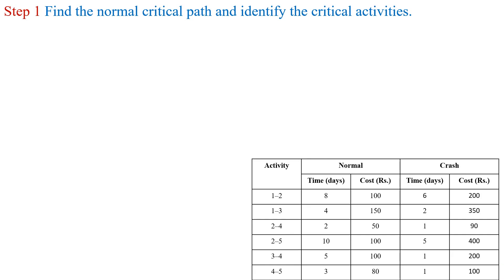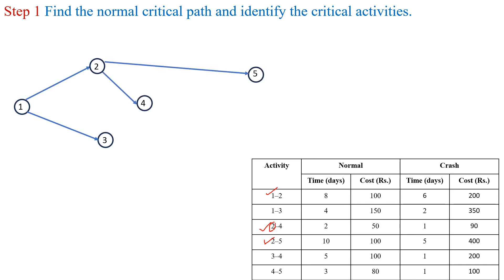Step 1 is to find the normal critical path and identify the critical activities, then draw a network diagram. We draw activity 1-2, activity 1-3, activities 2-4 and 2-5 from event 2, activity 3-4, and finally activity 4-5. The normal time is represented on the arrow of each activity.